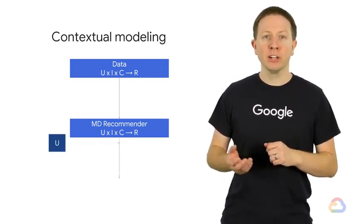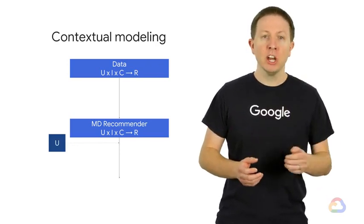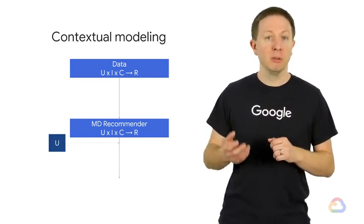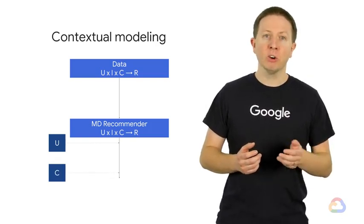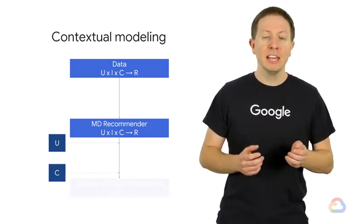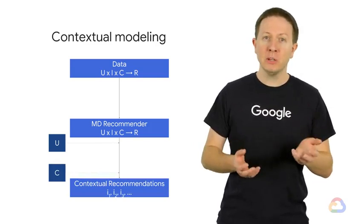We then can apply our user vector to our multi-dimensional recommendations to get the representation in multi-dimensional embedding space. Then we apply our context vector to our multi-dimensional recommendations, giving us finally our contextual recommendations for our user.